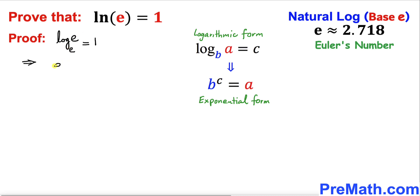So therefore we can write e to the power of 1 equals e. Now e to the power of 1 is the same as e equals e, and e equals e means this is indeed a true statement.